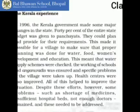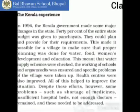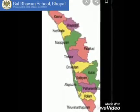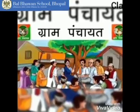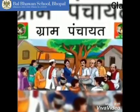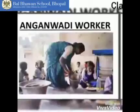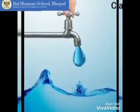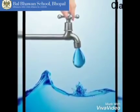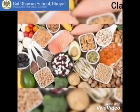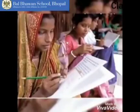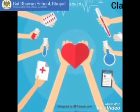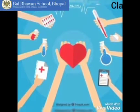In 1996, the Kerala government made some major changes in the state. 40% of the entire state budget was given to the Panchayats. They could plan according to their requirements, making it possible for villages to ensure proper planning for water, food, women's development and education. Water supply schemes were checked, the working of schools and Anganwadis was ensured, and specific problems of the village were taken up. Health centers were also improved, and all this helped to improve the situation.